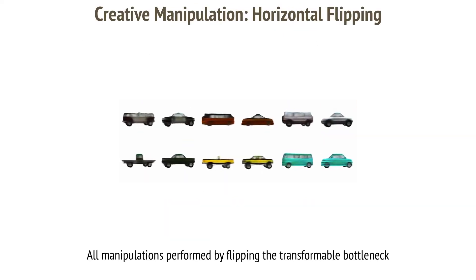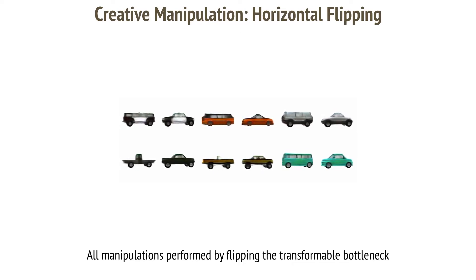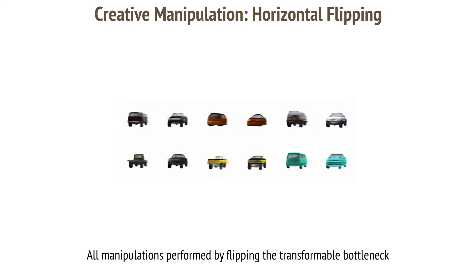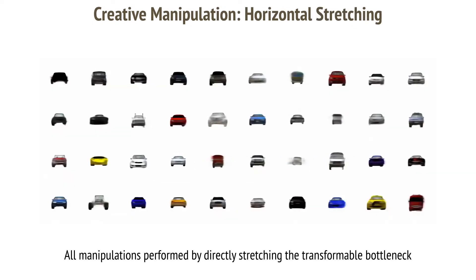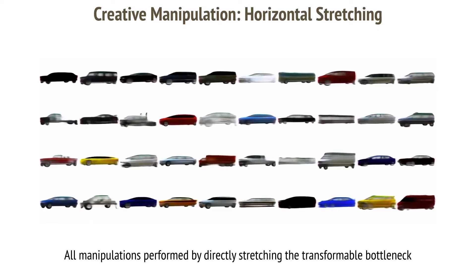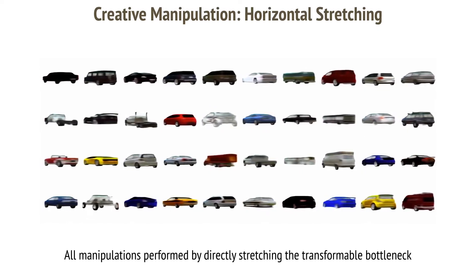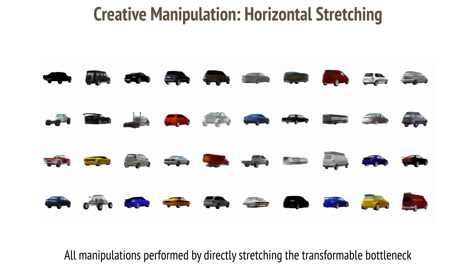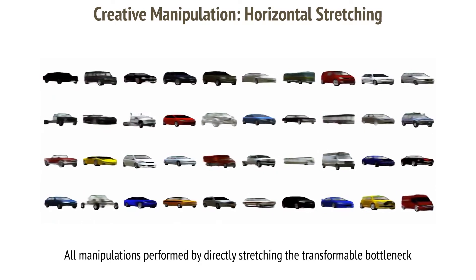We can flip half of the volume horizontally to create new objects with the corresponding structure. Here you see how one half of each of these cars was flipped and stitched with the original volume to create a new structure. We can also stretch the content of these bottlenecks to change the overall shapes of these cars, generating shapes that are well outside the range of those seen during training.